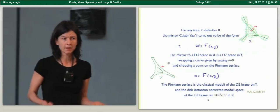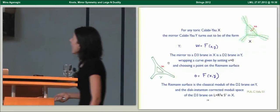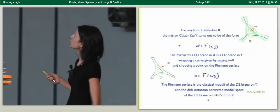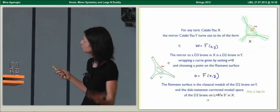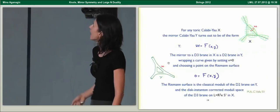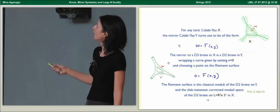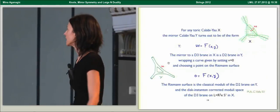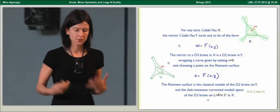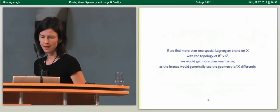For any toric Calabi-Yau X, the mirror turns out to be given by a hypersurface equation. A mirror to a D3 brane wrapping R2 times S1 in this geometry is a D2 brane in the mirror. It wraps a curve given by setting V equals zero and choosing a point on the Riemann surface. This Riemann surface is the classical moduli space of a D2 brane on Y and the disk instanton corrected moduli space of a D3 brane on the original Calabi-Yau X.